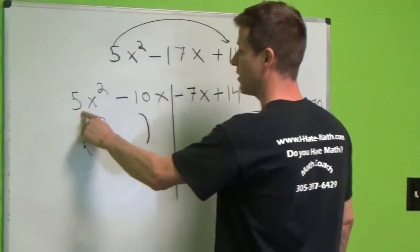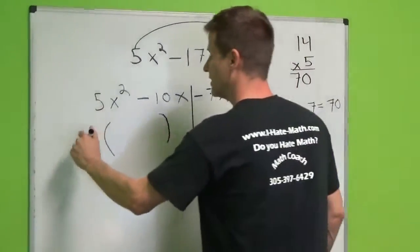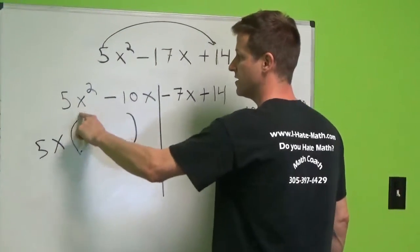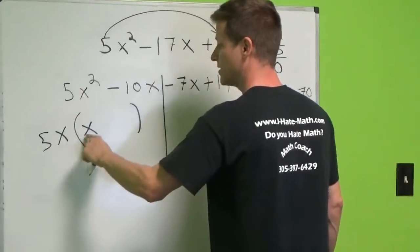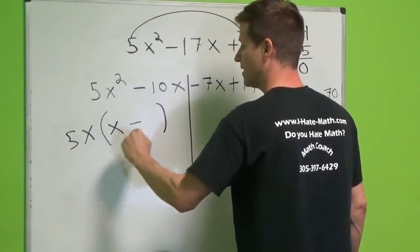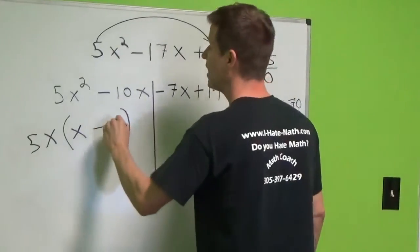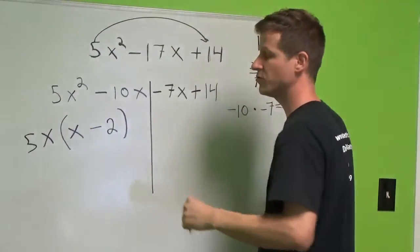What can we factor out between these two? This is a binomial. We can take out a 5 and an x. 5x times something gives us this. What are we missing? An x. 5x times x is 5x squared. 5x times a negative something gives us negative 10x. What are we missing? 2. This times this is that. We already have one piece to the puzzle.